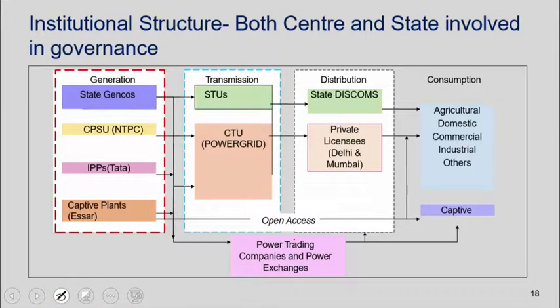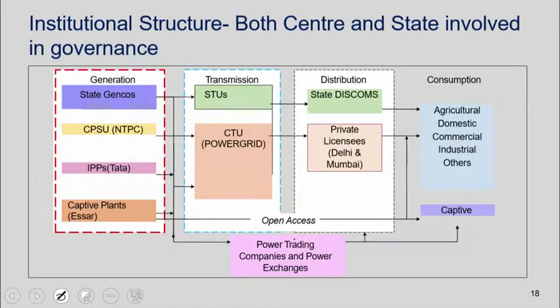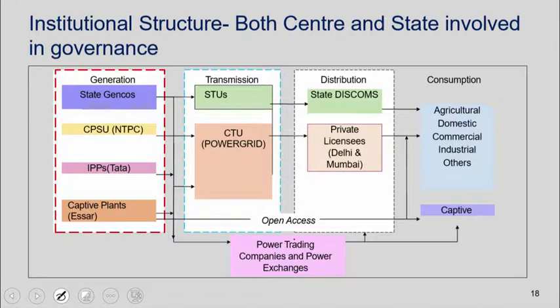We'll come to prices in a second. In the institutional structure, in generation we have state generating companies, NTPC as the national generating company, independent private sector producers, and also captive plants — companies which do their own generation. Then transmission, and distribution where we have the state DISCOMs — but increasingly in some cities like Delhi and Mumbai we also have private companies distributing power. And there are power trading companies and power exchanges where some buyers and sellers interact on a high-frequency basis, currently accounting for about 4% of total power bought and sold.